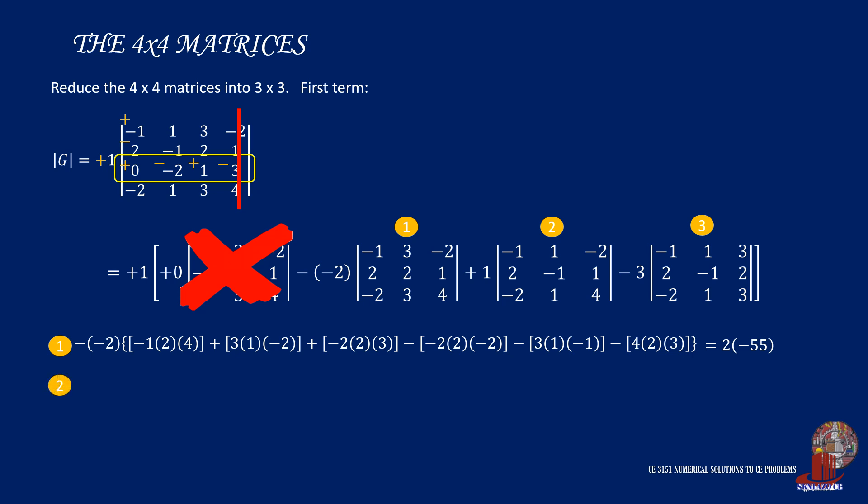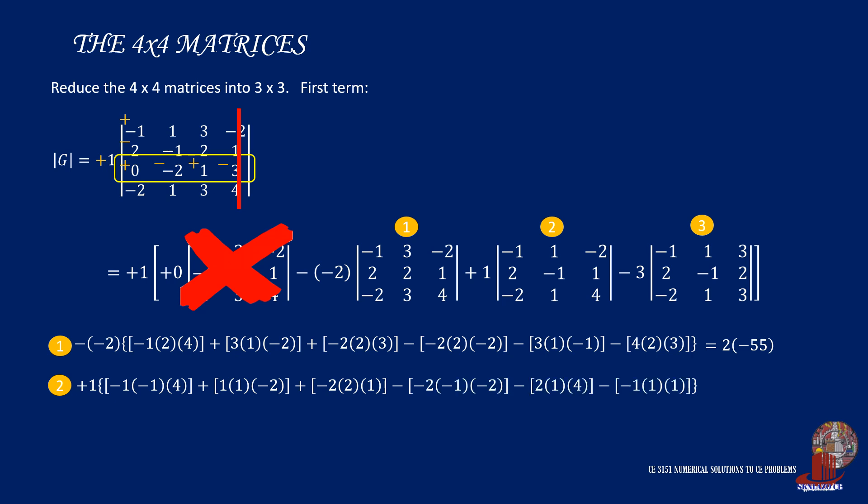Computation 2 has a scalar of 1. The diagonals have negative 1, negative 1, 4, then 1, 1, and negative 2. Lastly, negative 2, 1, and 2. The antidiagonals have negative 2, negative 1, and negative 2. Then, 2, 1, and 4. Also, negative 1, 1, and 1. If the expression is simplified, the positives minus the negatives give negative 5.